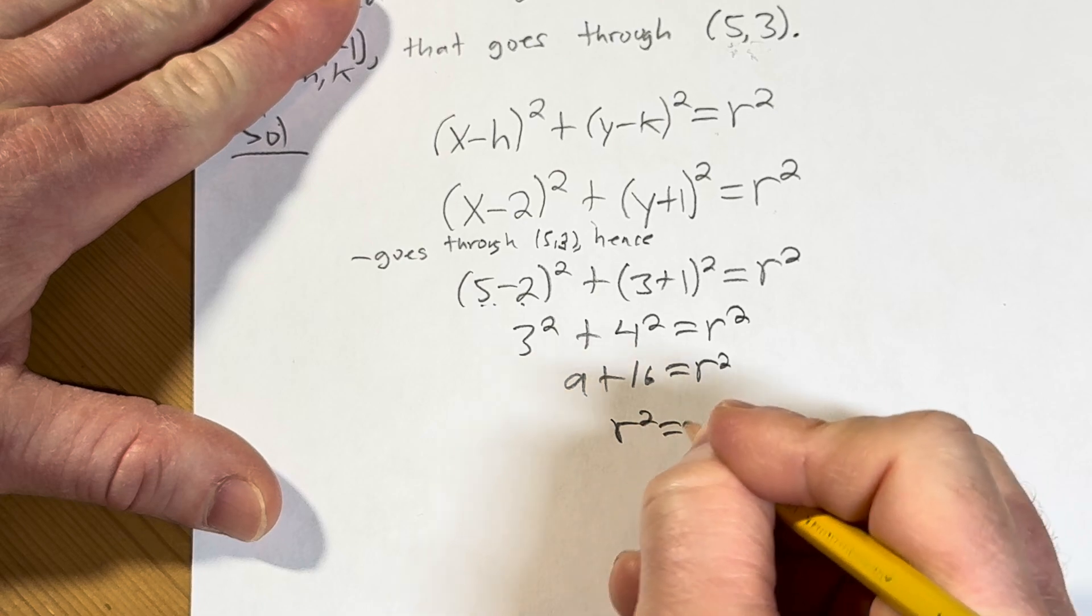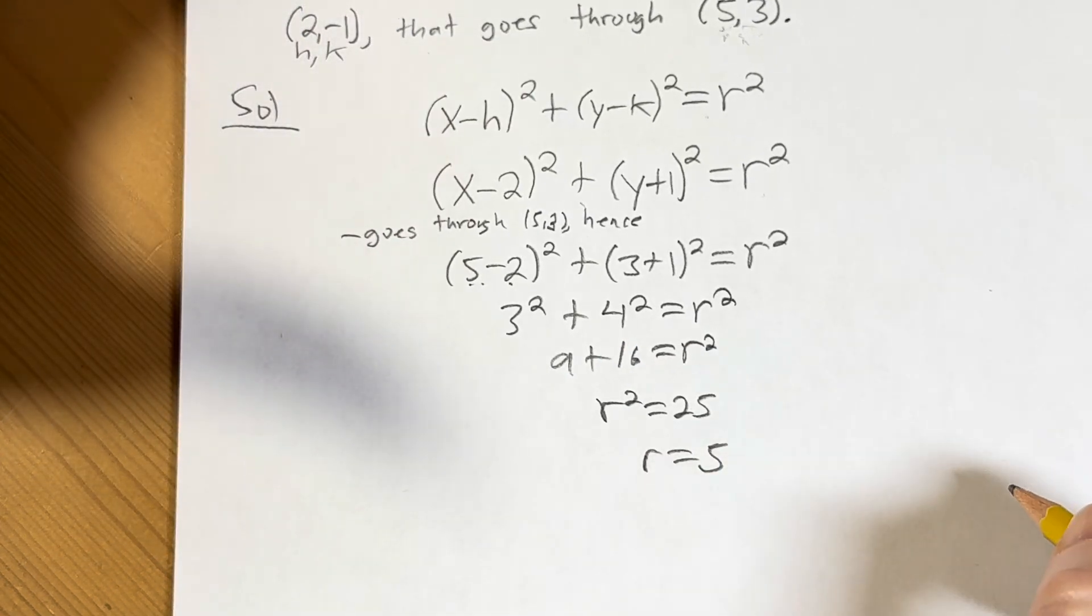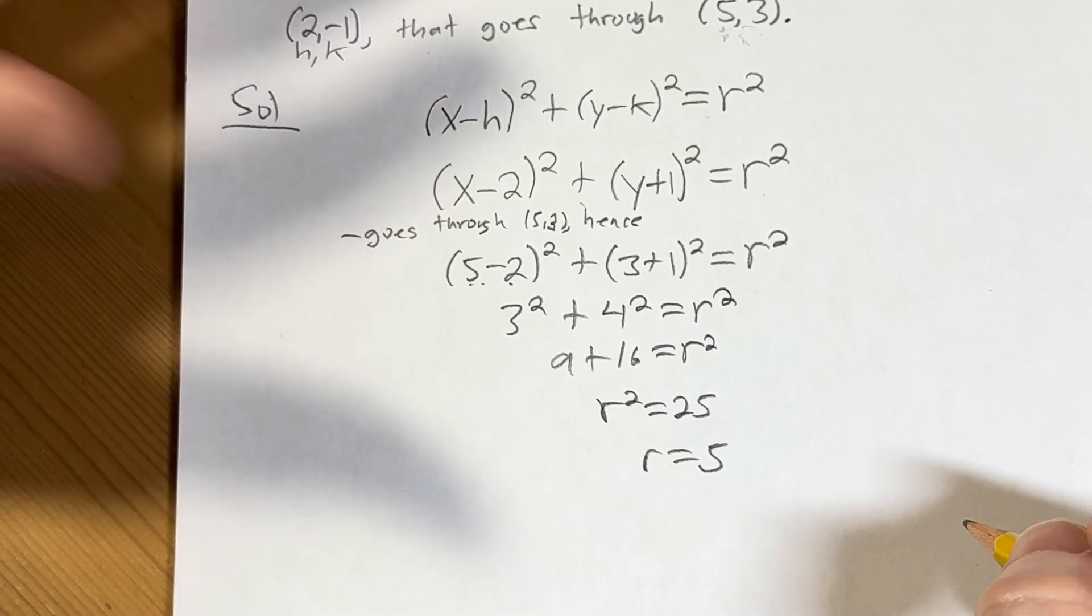So r² is equal to 25. So r is going to be 5, it's plus or minus 5, but we're only going to take the plus.